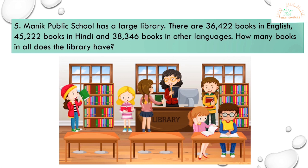Let's solve the fifth problem. Manic Public School has a large library. There are thirty-six thousand four hundred and twenty-two books in English, forty-five thousand two hundred and twenty-two books in Hindi, and thirty-eight thousand three hundred and forty-six books in other languages. How many books in all does the library have?